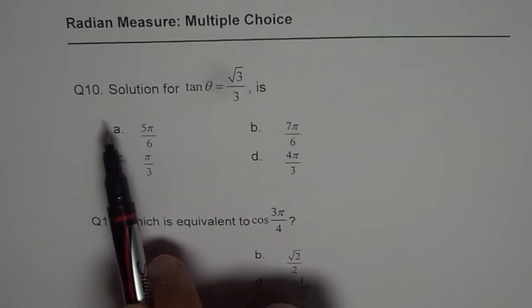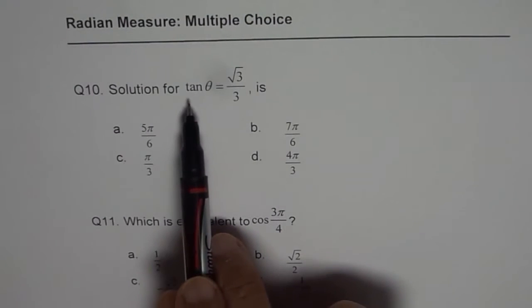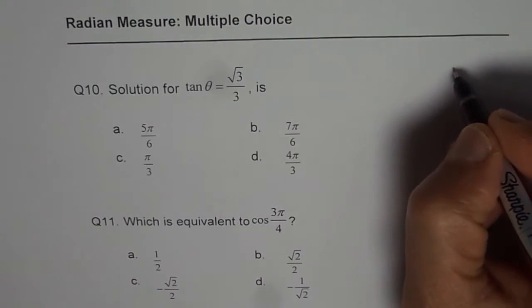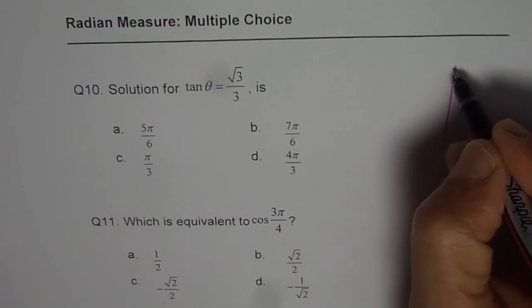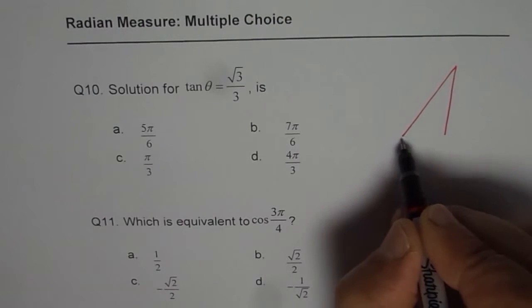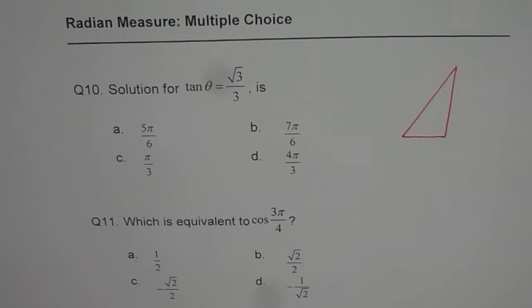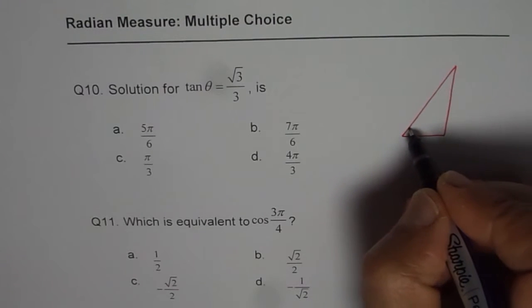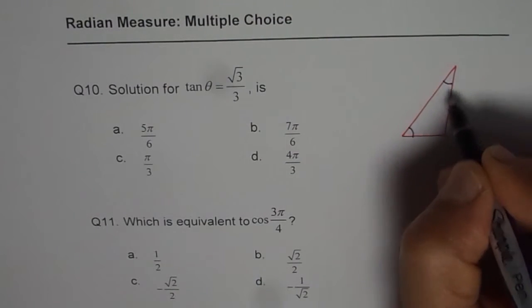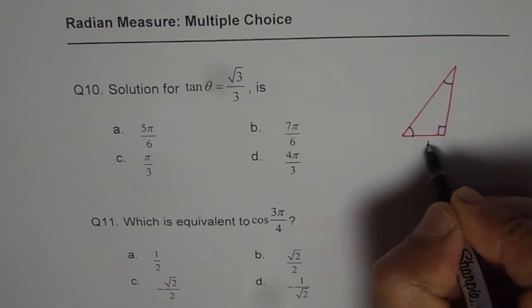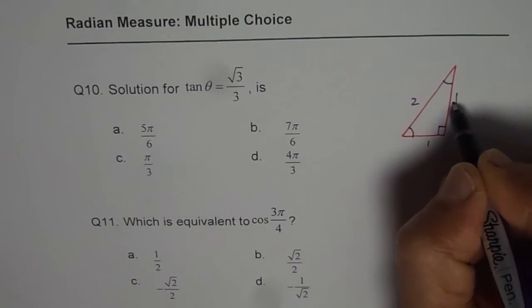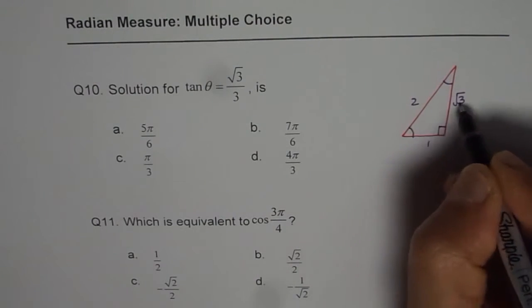My solution for question 10: we are looking for tan θ and we are looking for a value which is square root 3 over 3. So that means the triangle of our interest is 30, 60, 90, where we know that the sides are 1, 2, square root 3.